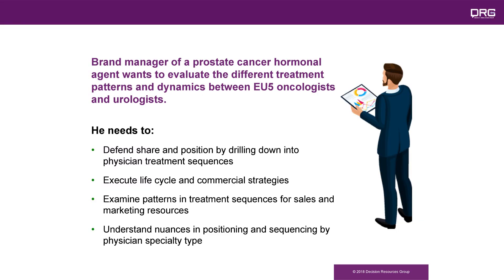So now let's have a look at the second scenario. In this example, a brand manager of a prostate cancer hormonal agent wants to evaluate the different treatment patterns and dynamics between EU5 oncologists and urologists. He needs to defend share and position by drilling down into physician treatment sequences, execute life cycle and commercial strategies, examine patterns in treatment sequences for sales and marketing resources, and understand nuances in positioning and sequencing by physician specialty type.